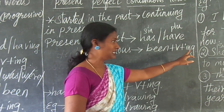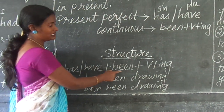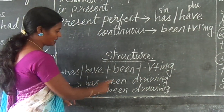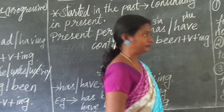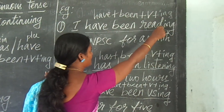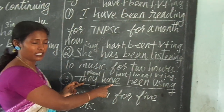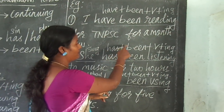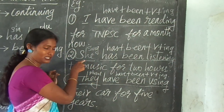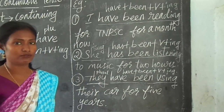Since it is continuous, we say been plus verb plus ing. And since it is perfect continuous, the structure for it is: has or have plus been plus verb plus ing. When we come to the example sentences: 'have been reading' — have plus been plus verb plus ing. If the subject is singular, we take 'has'; if the subject is plural, we take 'have'. We use 'have' with 'I' because 'I' is the exception for the have verbs. This is all about present perfect continuous tense.